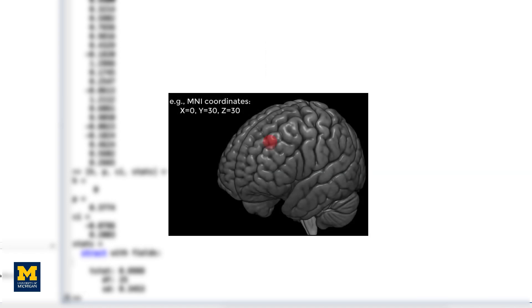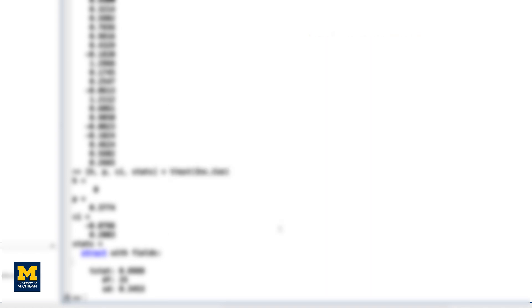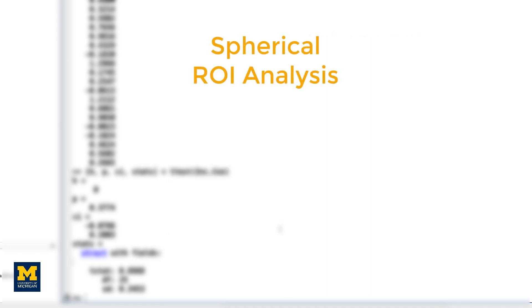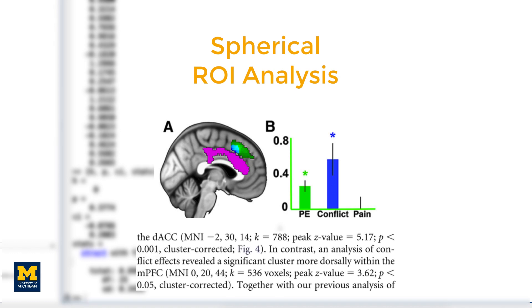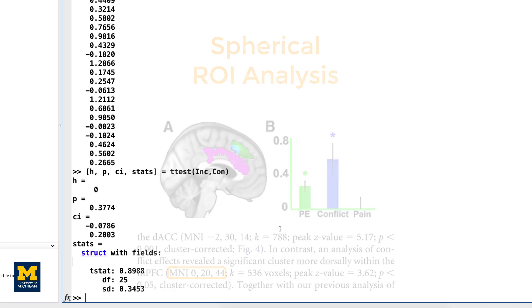Another technique is called the spherical ROI approach that we talked about earlier. This is considered an independent analysis since the ROI is defined based on a separate study. To create this ROI, we will need to use coordinates from another study. Let's randomly pick a paper, such as Jan et al. 2016. In the results section, we find that there is a conflict effect for a Stroop task — a distinct but related experimental design also intended to tap into cognitive control — with a peak t-statistic at MNI coordinates 0, 20, 44.